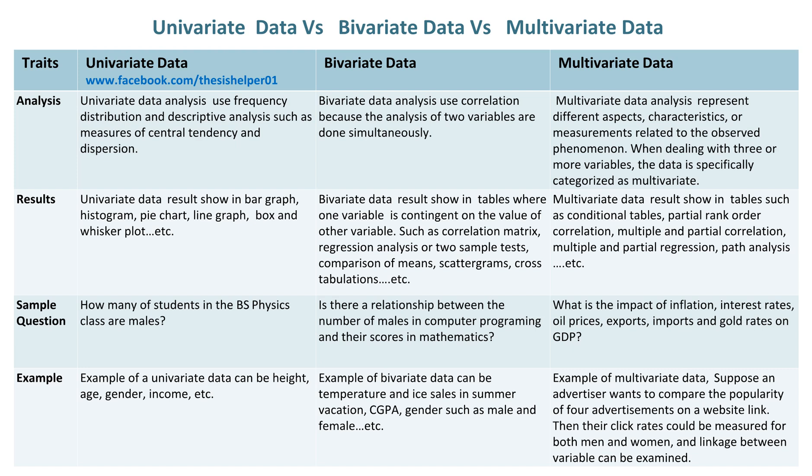Whereas bivariate data results are shown in tables where one variable is contingent on the value of the other variable, such as correlation matrix, regression analysis, two-sample tests, comparison of means, scattergrams, cross-tabulations, etc.